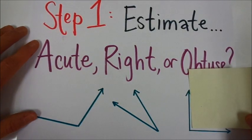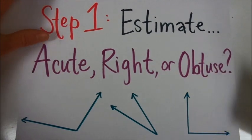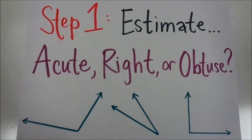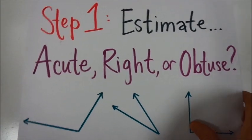And when we use it to measure this one, we can see that it fits exactly, so it is likely a right angle. So whenever you're going to estimate an angle, be sure you start with estimating, is it acute, right, or obtuse?